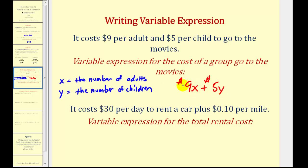Again, x represents the number of adults attending, and each adult will have to pay $9, and y represents the number of children attending, and every child will have to pay $5 to attend.